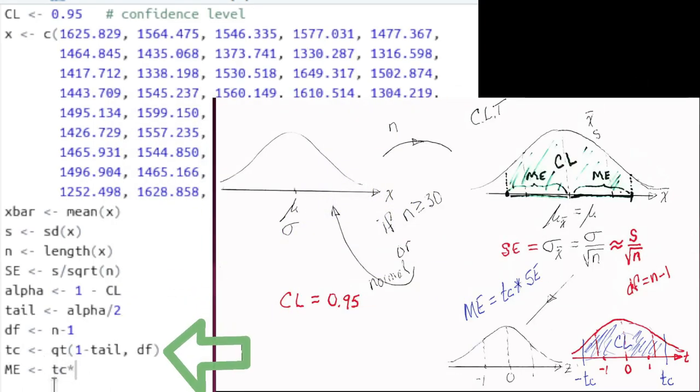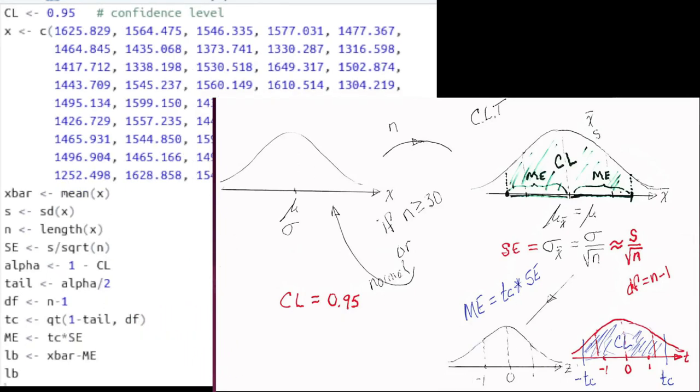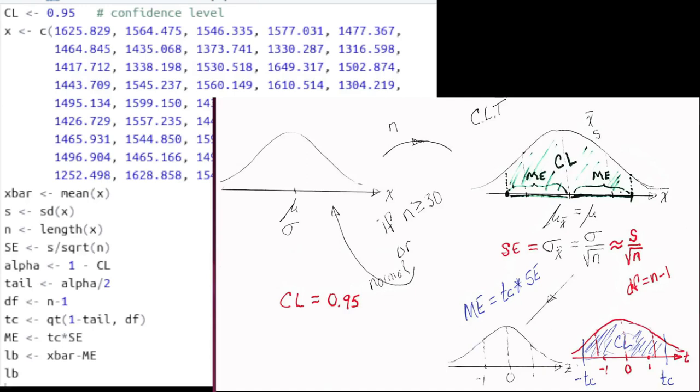We now know the needed number of standard deviations. And we know the size of the standard deviation, that's SE. So the ME is going to be TC times SE. The lower bound of our confidence interval will therefore be X bar minus ME and the upper bound will be X bar plus ME. So let's shout out that lower bound and that upper bound.